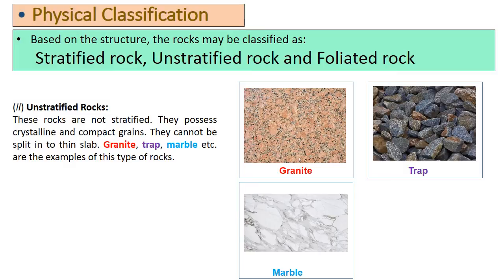Now let's discuss unstratified rocks, which is the physical classification of rock. These rocks are not stratified. They possess crystalline and compact grains and cannot be split into thin slabs. Granite, trap, marble, etc. are examples of this type of rocks.